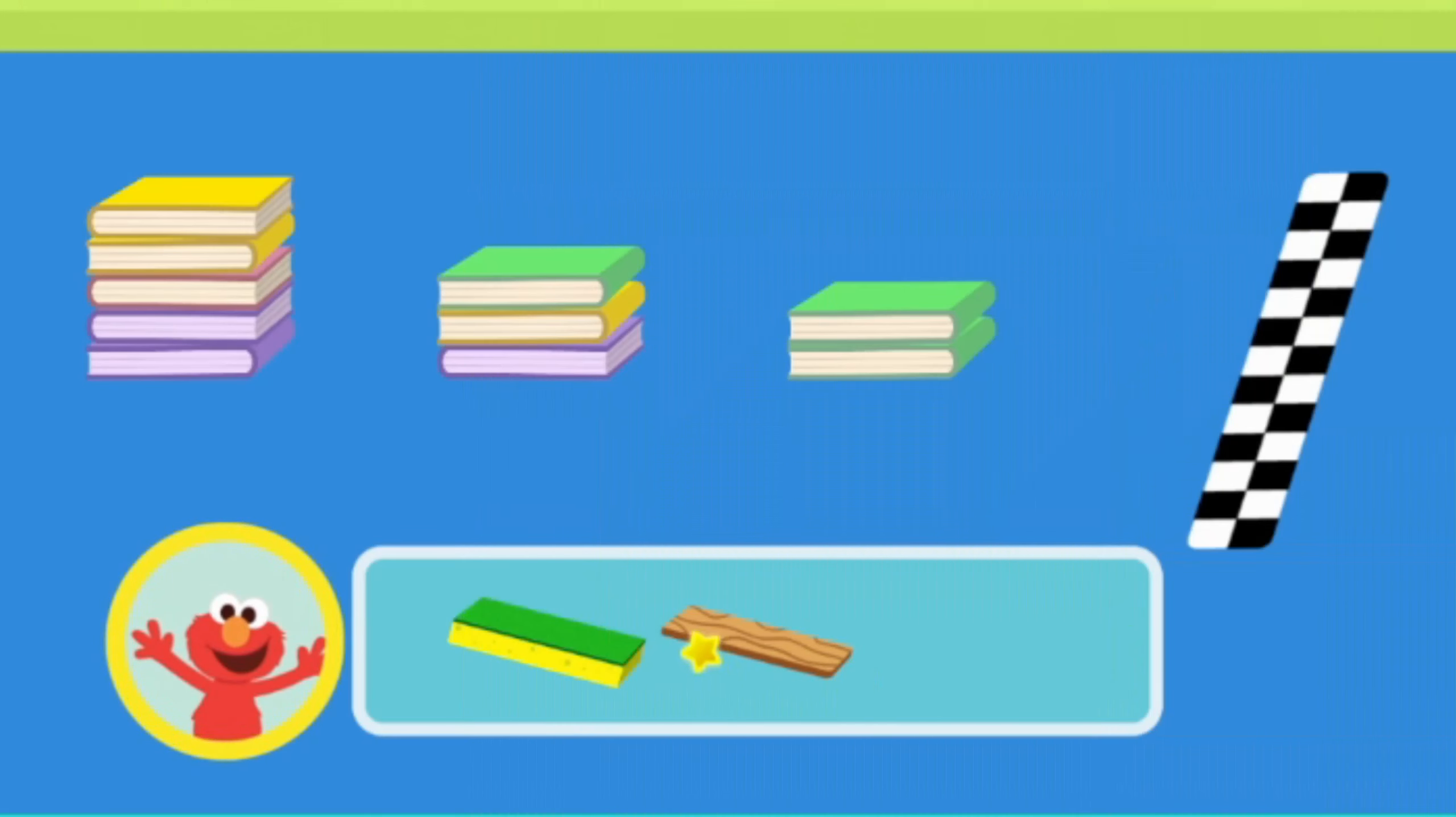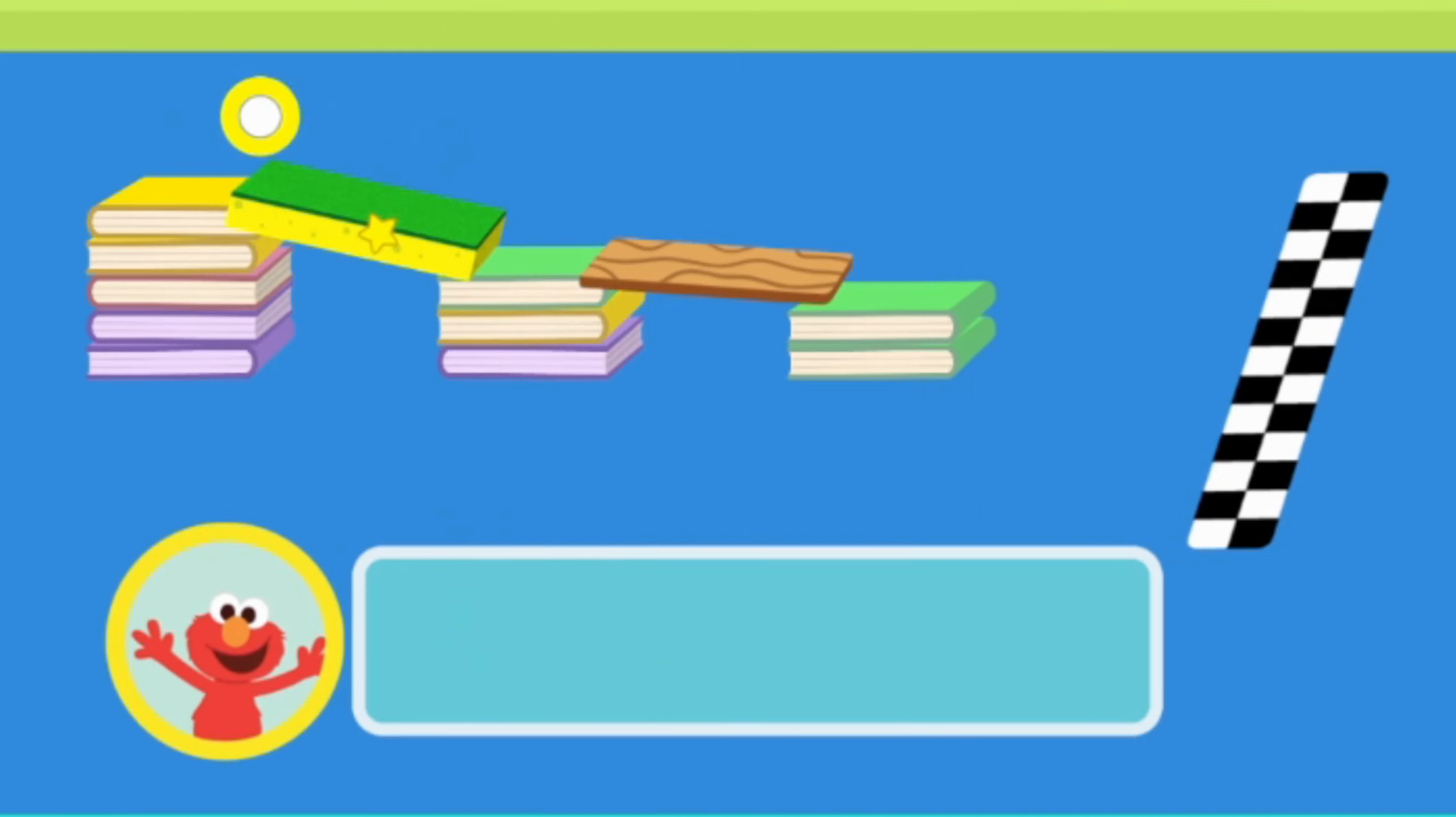Elmo and Rosita made three stacks of books. Let's use the objects to connect them and click on the ball when you're ready to test your ramp.